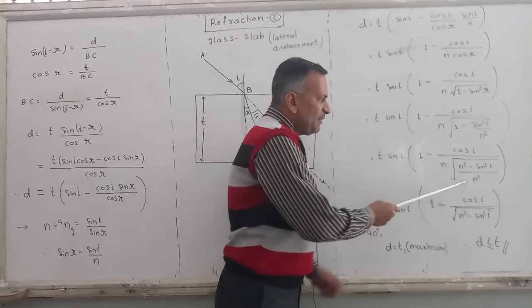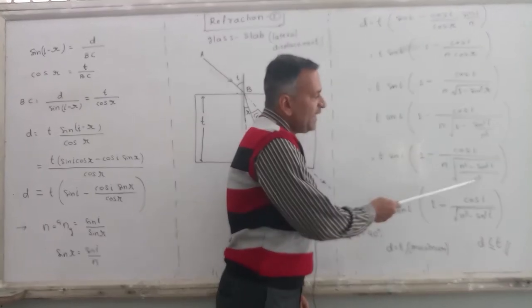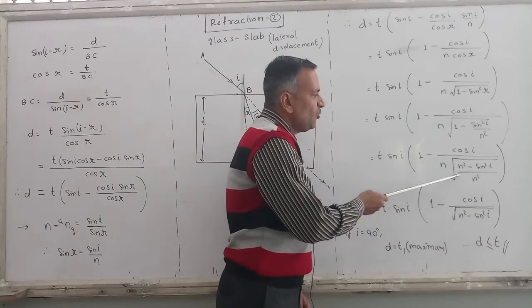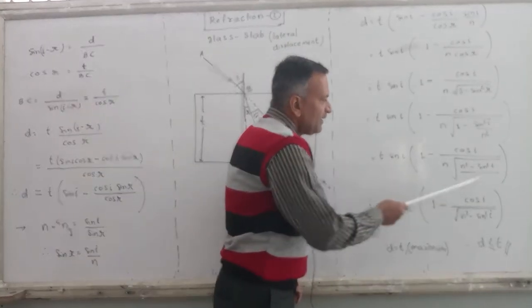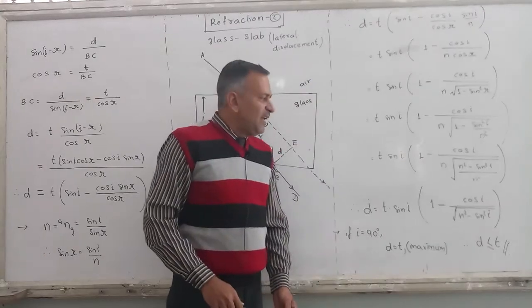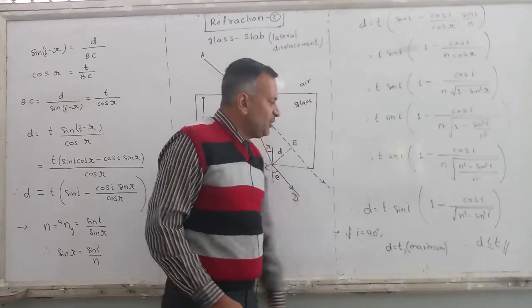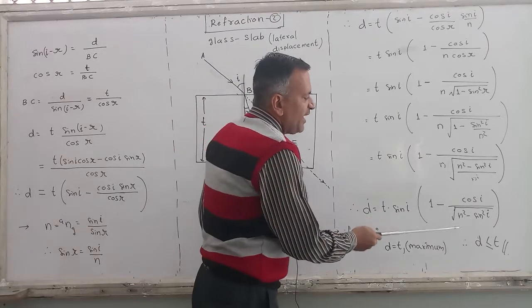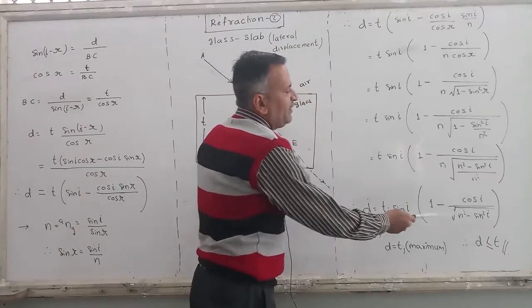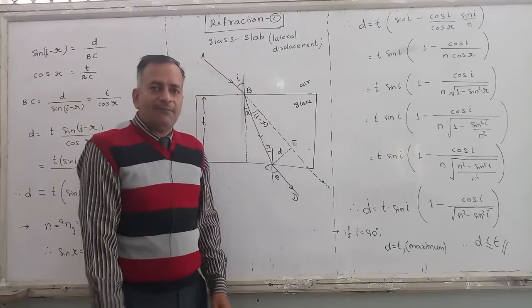Now see, this is in numerator, this is in denominator. See, this is N square, but there is a square root also on top of it. So what is the actual power of N? It is 1. So this and this, they again get cancelled out. And this is the final equation: D equals T sine I times 1 minus cos I over square root of N square minus sin square I. So lateral displacement's mathematics we have found out.